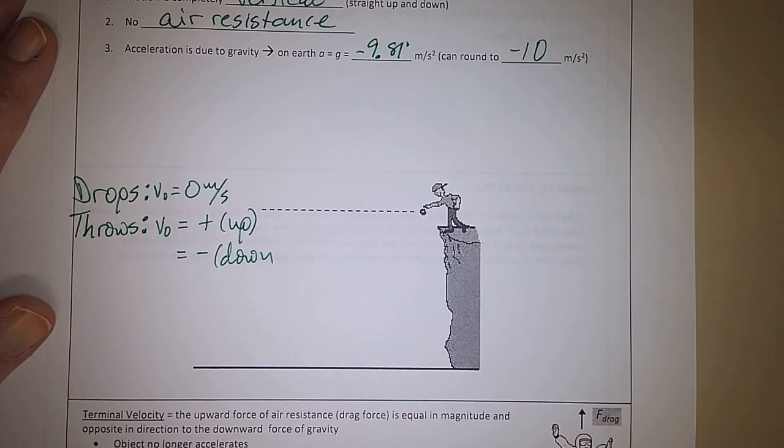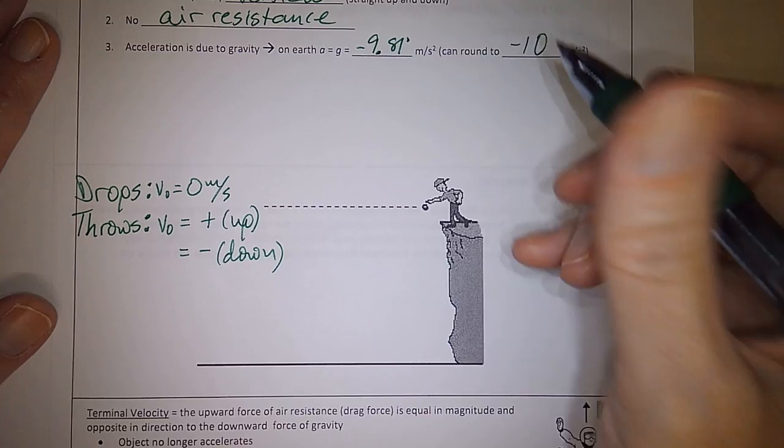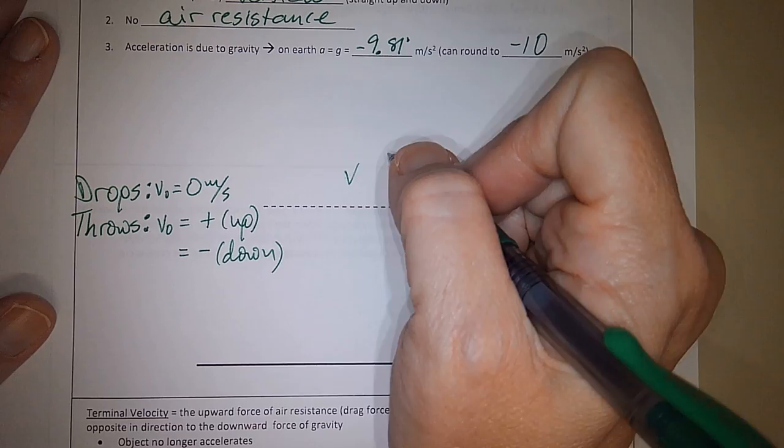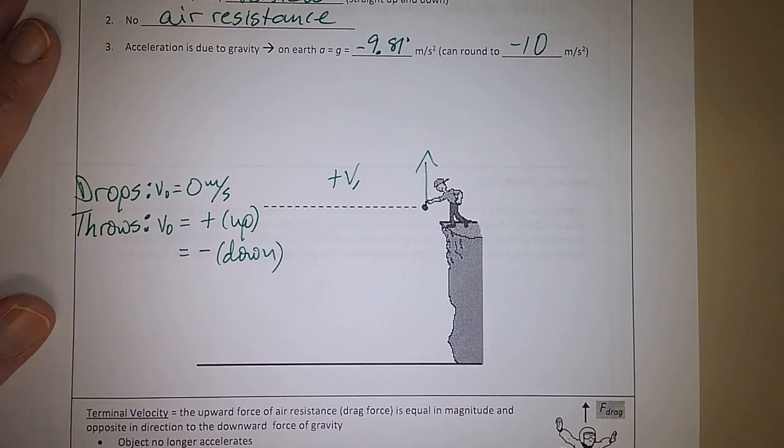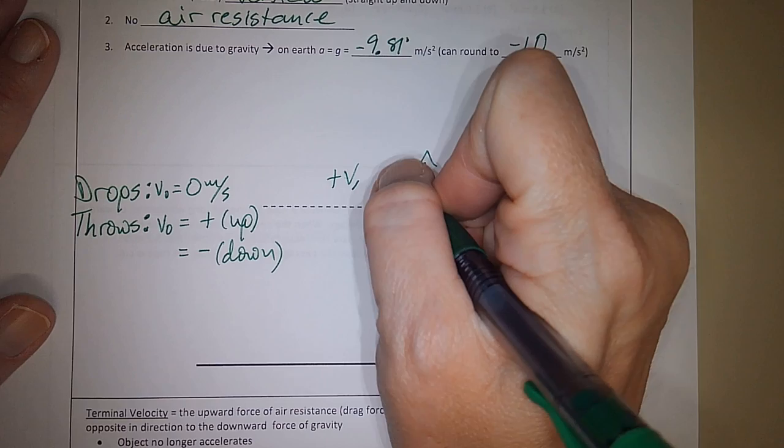So if he throws it up, I'm saying that my velocity on the way up is positive. And my displacement, I'm going to call that delta y now because we're only working in the vertical. So my delta y on the way up is also positive.